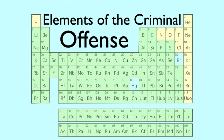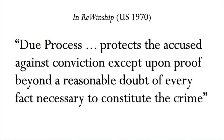Our subject is the definition of criminal offenses. Criminal offenses are defined in terms of elements — that is, they are defined as distinctive sets of elements. The elements of the offense charged make up the prosecution's case in chief, that is, what the prosecution has to prove, and to prove beyond a reasonable doubt. This is what due process requires.